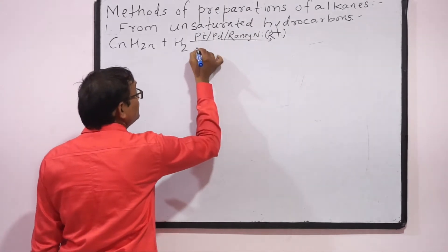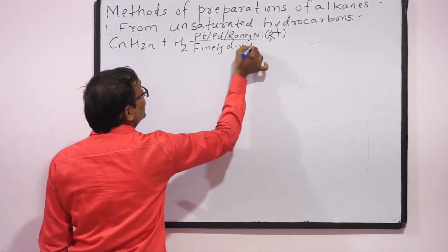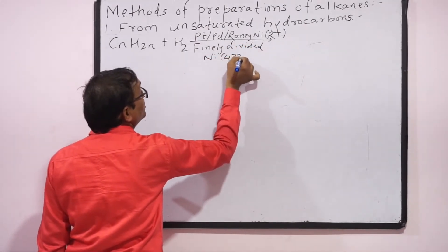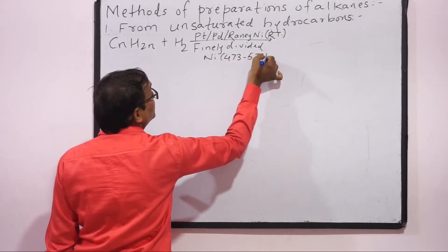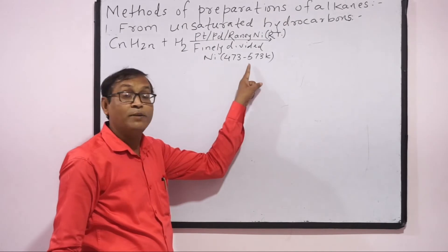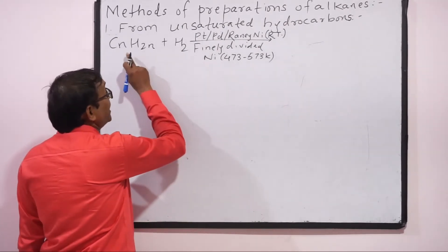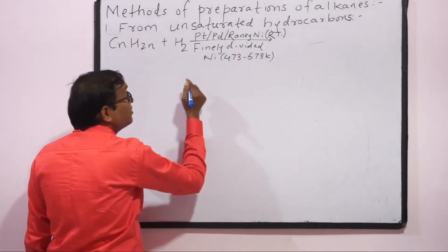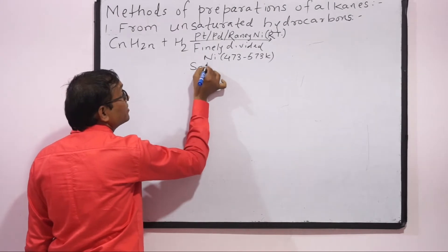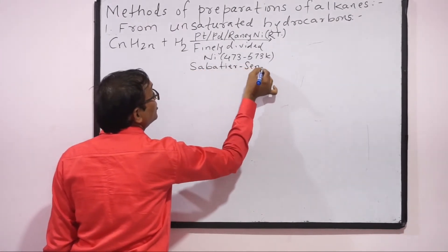Aur agar hum finely divided nickel use karte hai as catalyst to temperature 473 to 573 Kelvin use karna padega. Means we have to use high temperature, high pressure. If we carry out this reaction in presence of finely divided nickel, then it is known as Sabatier-Senden reaction.